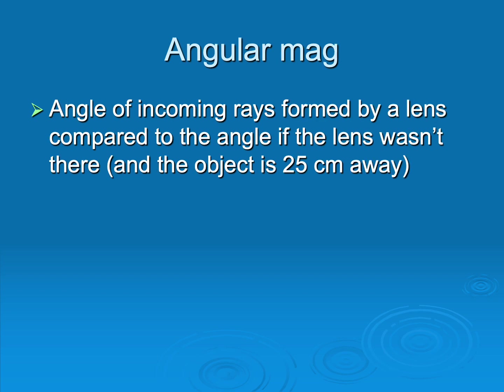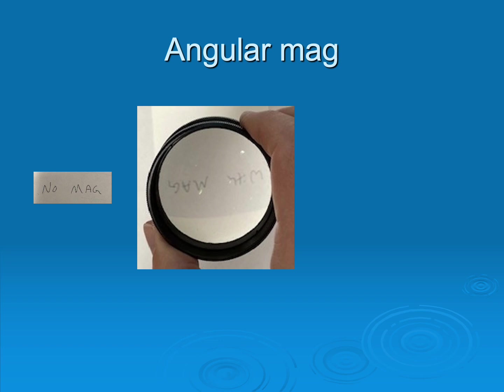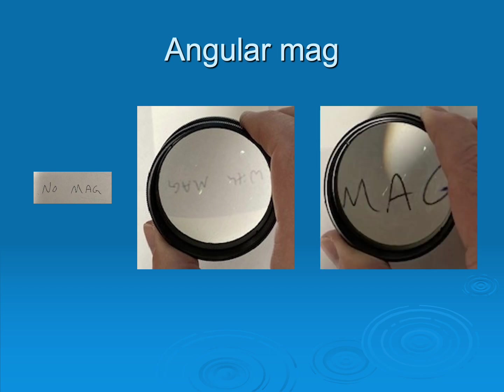Now we'll talk about a third kind of magnification: angular magnification. Grab your 20-diopter lens — it should be in your pocket. Hold a piece of paper with something written on it and slowly move the lens closer. At a certain distance you'll see the image flipped vertically and horizontally with some magnification. Push even closer and you see a lot of magnification with the image back in the same orientation as your original object. This is called simple magnification, which is the same thing as angular magnification.